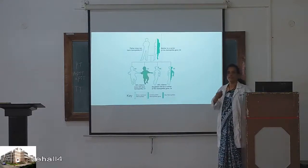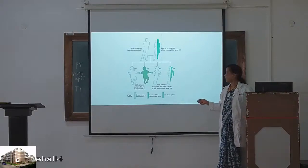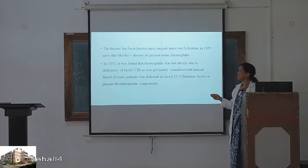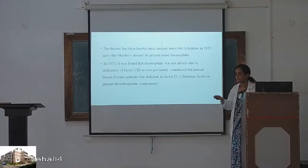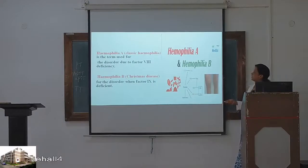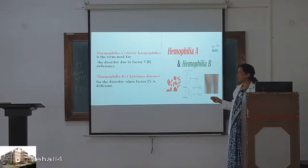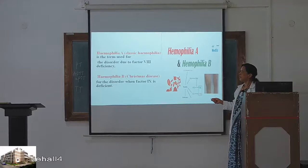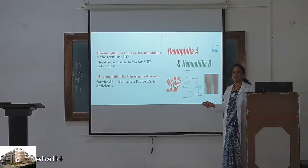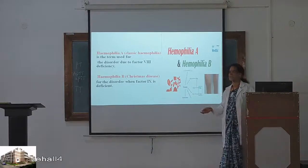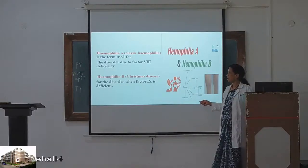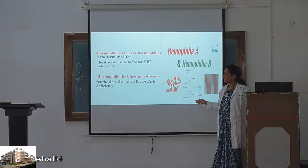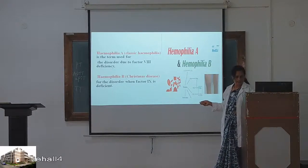The disease has been known since ancient times and is called the disease of the royal family. Hemophilia A is classic hemophilia, caused by deficiency of coagulation factor VIII. Hemophilia B is called Christmas disease because factor IX is called the Christmas factor, and it is caused by deficiency of factor IX.